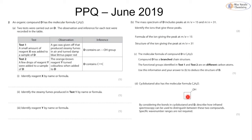For question two on organic compound D with molecular formula C₄H₈O: adding reagent X gives steamy fumes that turn litmus paper red, indicating chlorine gas and an OH group — so reagent X is PCl₅ (phosphorus pentachloride). The steamy fumes are HCl (hydrogen chloride) gas. For test two, adding reagent Y turns the orange-brown reagent colourless, indicating a double bond is present — so reagent Y is bromine water.